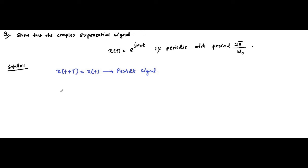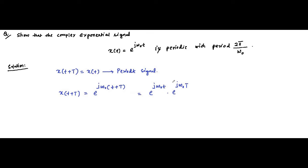Let us see. X(t + T) = e^(jω₀(t + T)), which is equal to e^(jω₀t) multiplied with e^(jω₀T). If this complex exponential signal is periodic, then this should be equal to X(t) = e^(jω₀t).